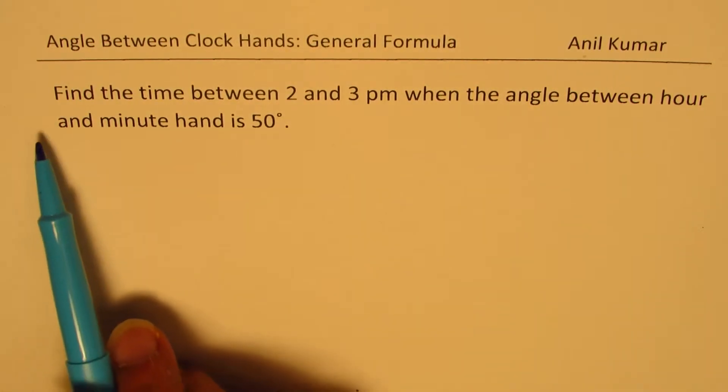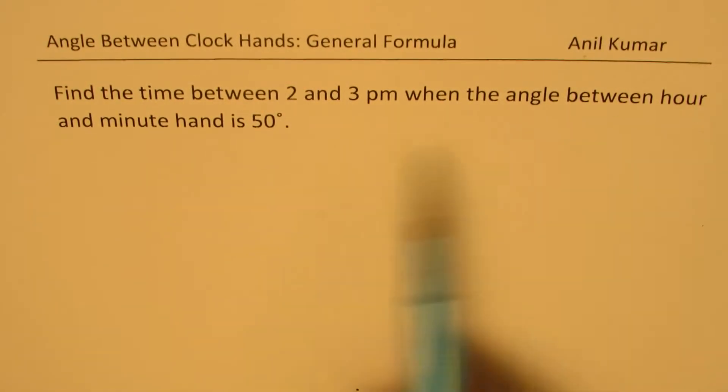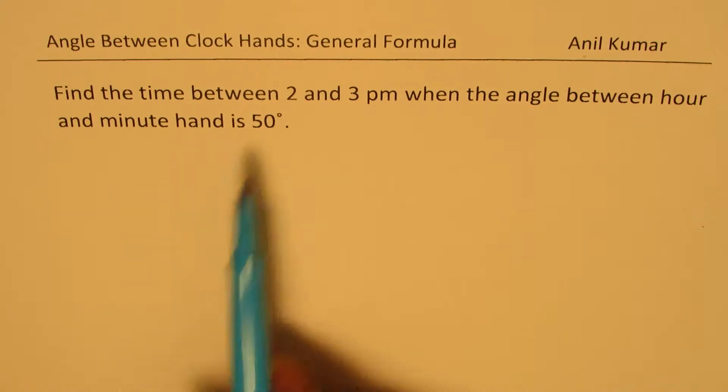The question here is: find the time between 2 and 3 p.m. when the angle between hour and minute hand is 50 degrees.